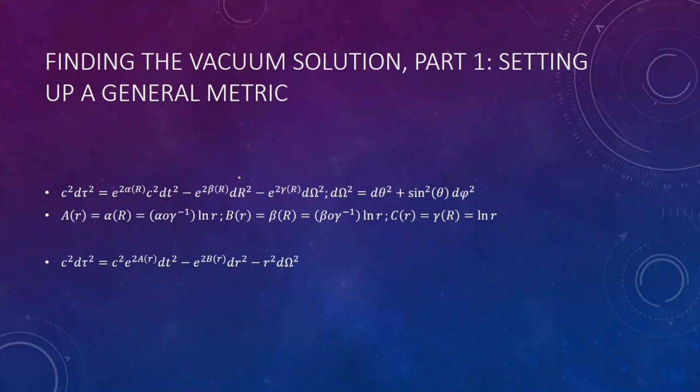Part one: setting up a general metric. This is the metric that we'll use to find our Ricci tensor and Ricci scalar and plug into the Einstein field equation. With it being zero as one of the conditions, we'll be able to narrow down the possible solutions and go from a general metric to a specific metric.